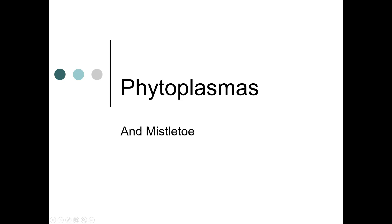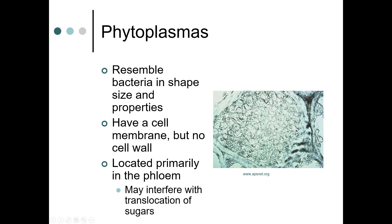This week we're talking about phytoplasmas and mistletoe. Phytoplasmas resemble bacteria in shape, size, and properties. They have a cell membrane but no cell wall, and they are located primarily in the phloem.